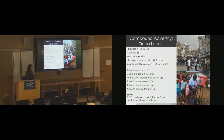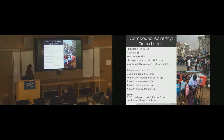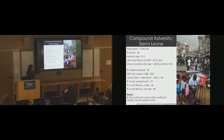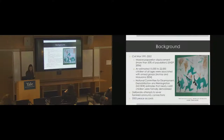Sierra Leone is a tiny nation of about six million people that for a number of years has been vying for the bottom of the UN Human Development Index, with extremely high rates of infant and maternal mortality. The health system was not functional before the Ebola outbreak. The Ebola crisis led to over 8,700 confirmed cases and nearly 4,000 confirmed deaths, causing massive health system strain and eventual collapse.